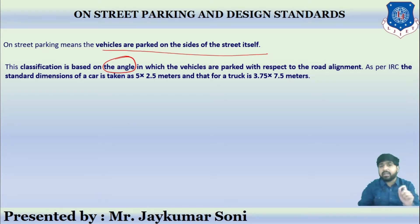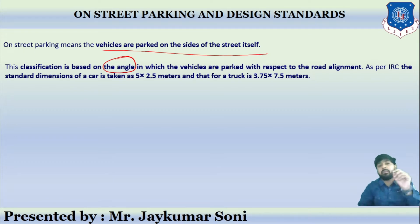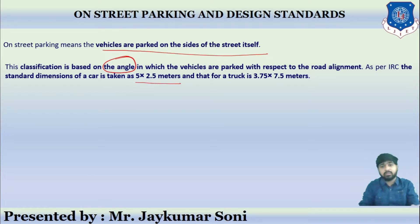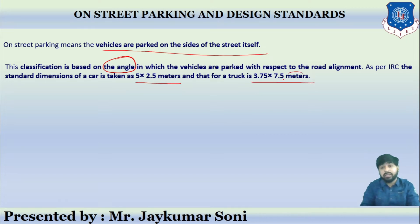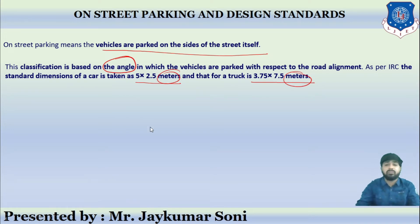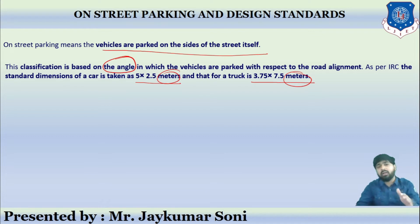As per Indian Road Congress, the standard dimension of a car considered for parking is 5 by 2.5 meters. For a truck, the standard dimension is 3.75 by 7.5 meters. These are the minimum standard dimensions for car and truck respectively when discussing on-street parking.